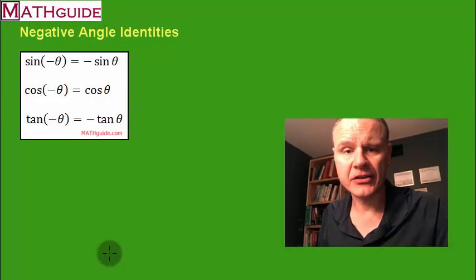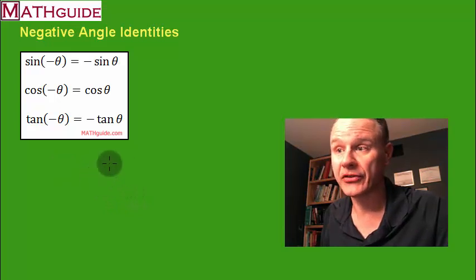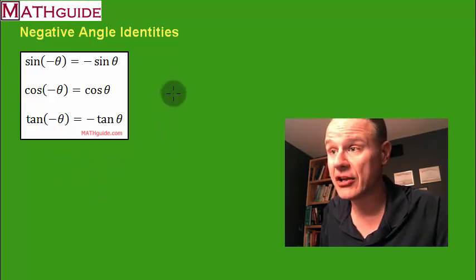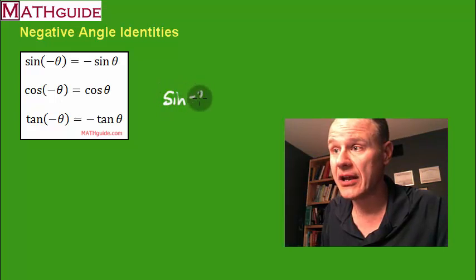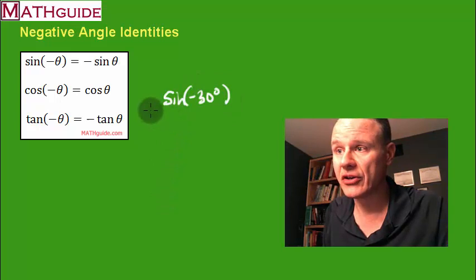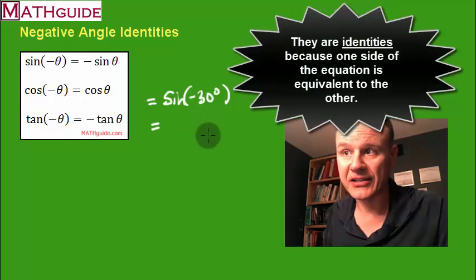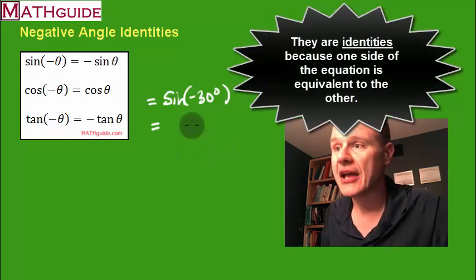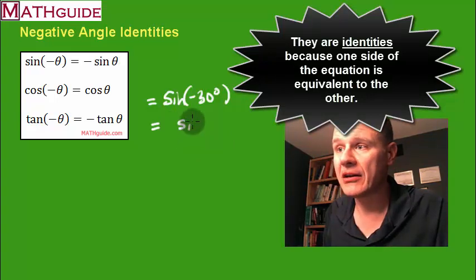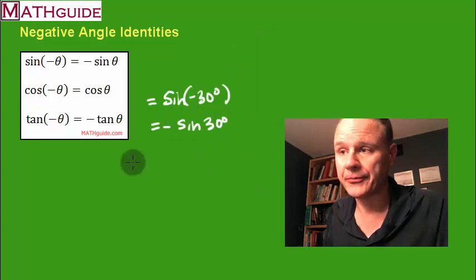Let's understand these negative angle identities. The best way to do that is to look at a few examples. For instance, let's say you wanted to find the sine of negative 30 degrees. If you wanted to find the sine of negative 30 degrees according to these identities, you would find the sine of 30 degrees and then just take the opposite of that value.